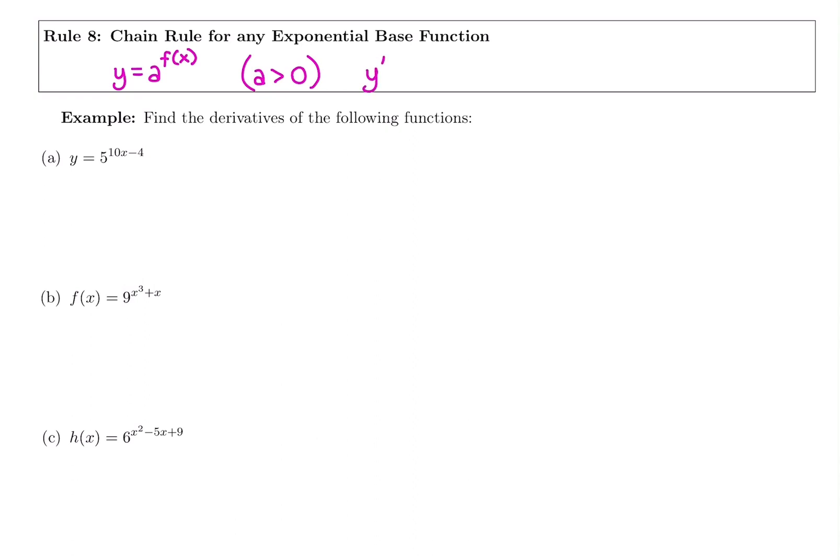When you take the derivative, it's a combination of rule 6 and 7. When your power has more than an x in it, you're going to start by taking the derivative of your power. Since your base is not e, you need ln of your base. And then like all exponential derivatives, you get credit for just copying down the original, a to the original power.